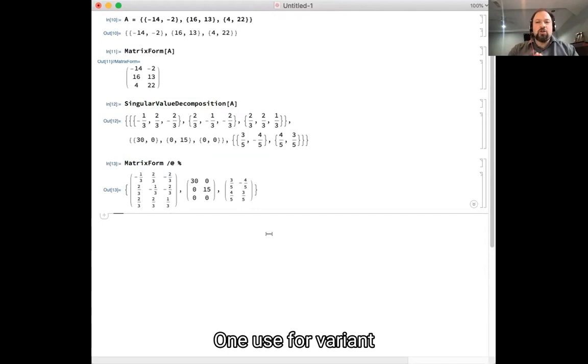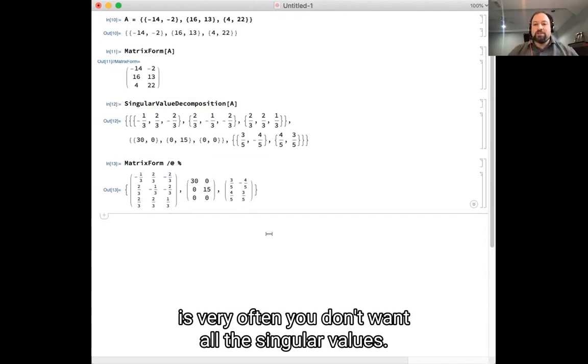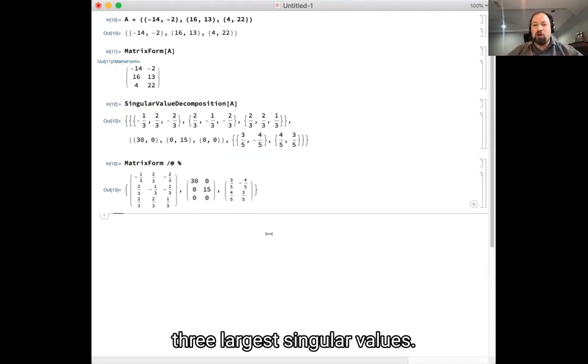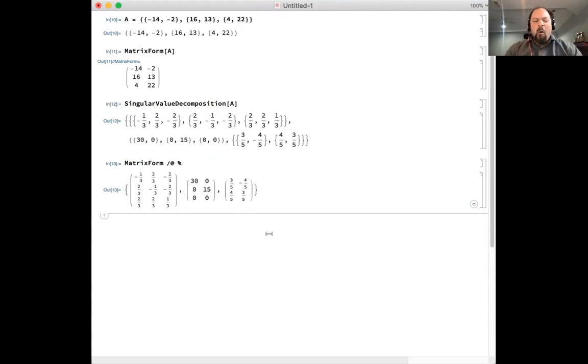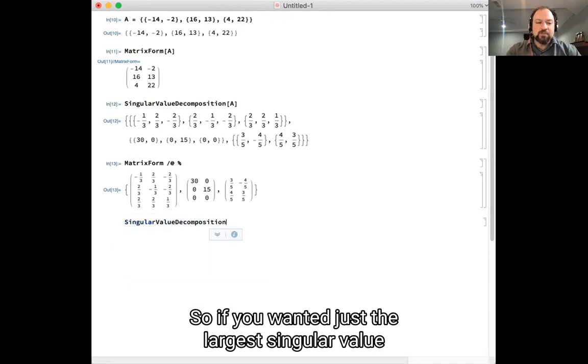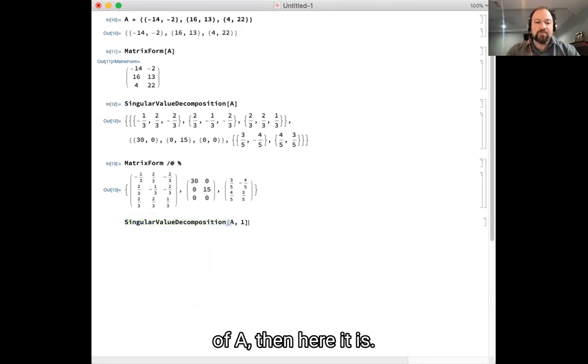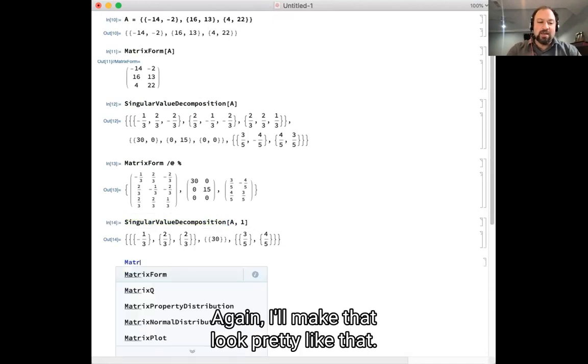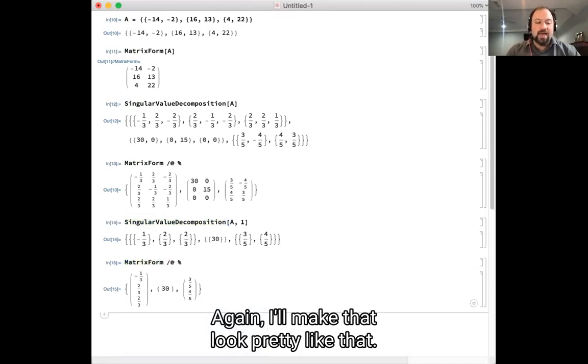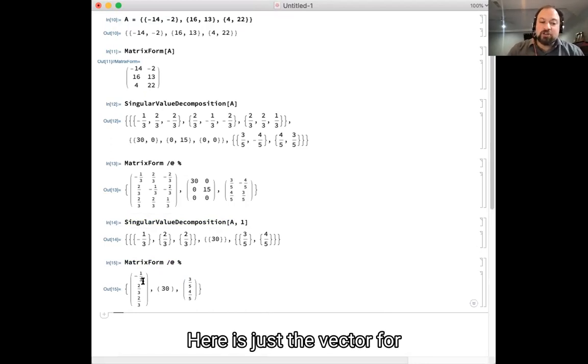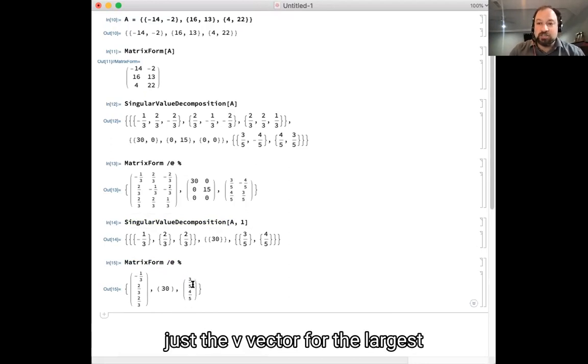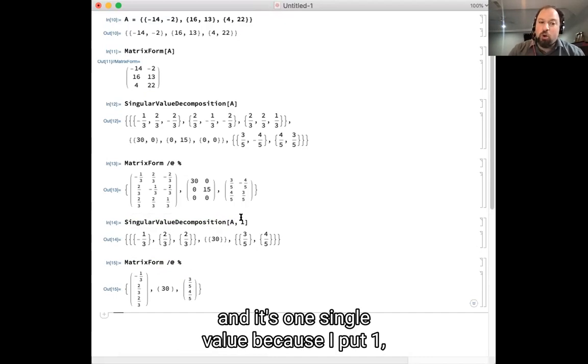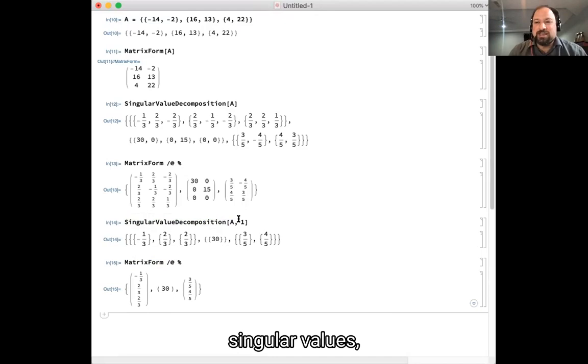One useful variant is very often you don't want all the singular values. What you want is the one or two or three largest singular values. And we'll talk a little bit more about why that is in future videos. So if you wanted just the largest singular value of A, then here it is. And again, I'll make that look pretty. Like that. Here is just the vector for the single largest singular value, just the matrix for the largest singular value, just the V vector for the largest singular value. And that one, and it's one singular value because I put one. If I put 12 here, we have 12 largest singular values. Of course, I'd need a larger matrix if I wanted to do that.